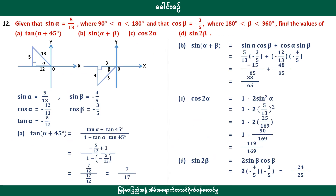This is sine 12, given that sine alpha is 5 by 13, 2 and 4 degrees, 1 and 2. Cosine beta is minus 3 by 5, 2 and 2, and 2.